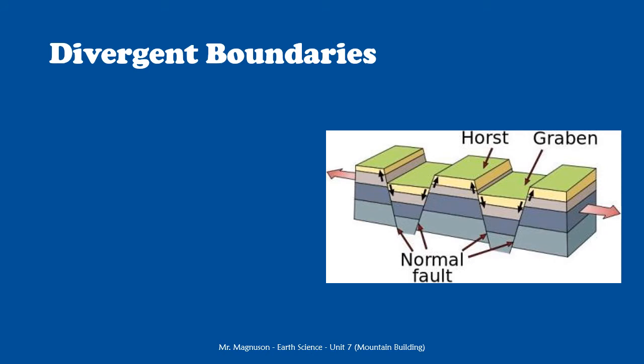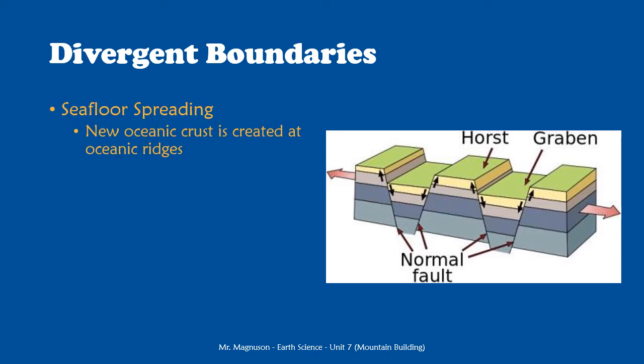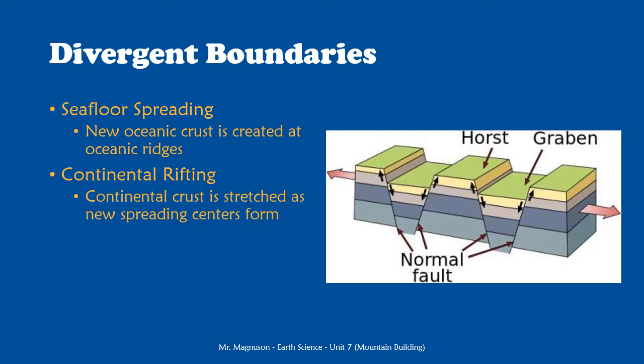First, we are going to talk about divergent boundaries. There are two types of divergent boundaries that we learned about. We learned about seafloor spreading — this is what happens under the ocean, where new oceanic crust is created at oceanic ridges as those two plates are spreading apart. And we learned about continental rifting, where continental crust is stretched to form new spreading centers, a process that can result in the formation of new divergent boundaries.